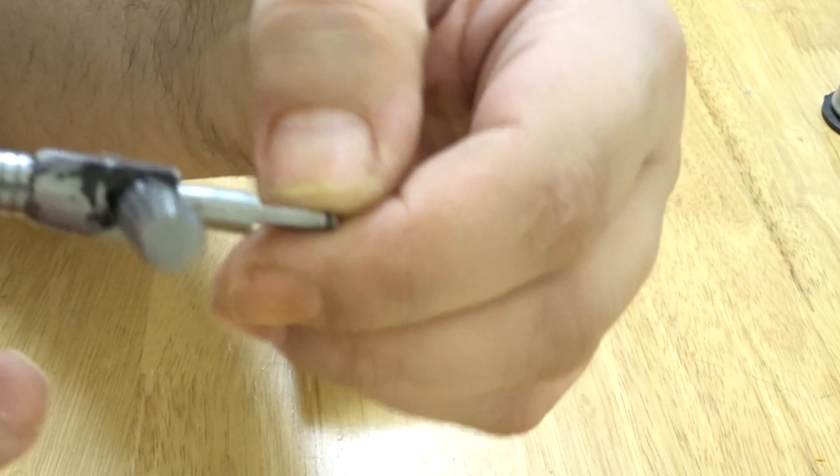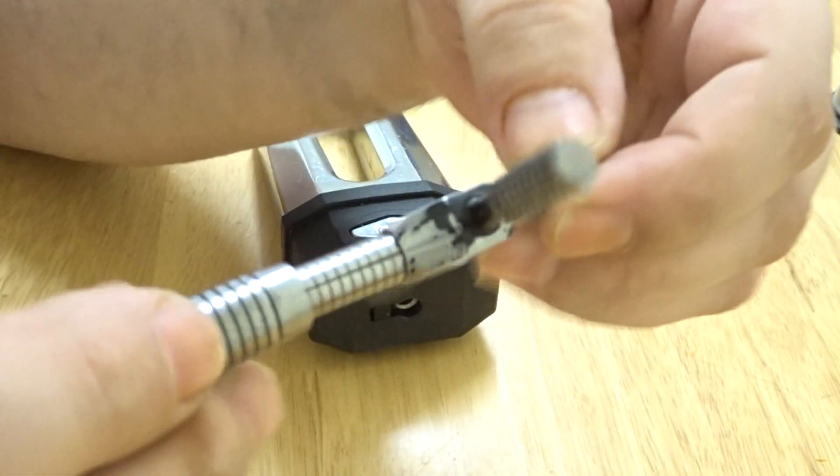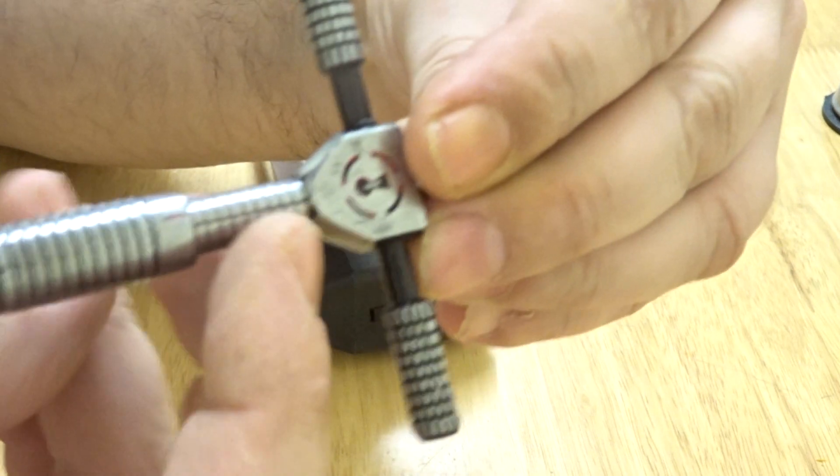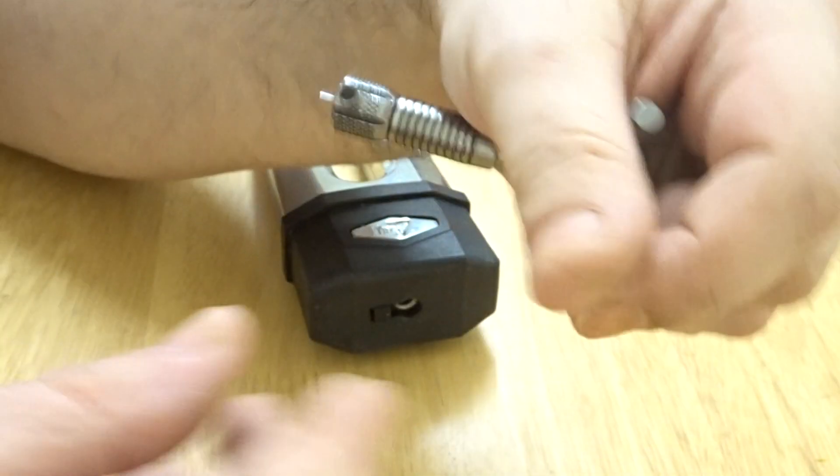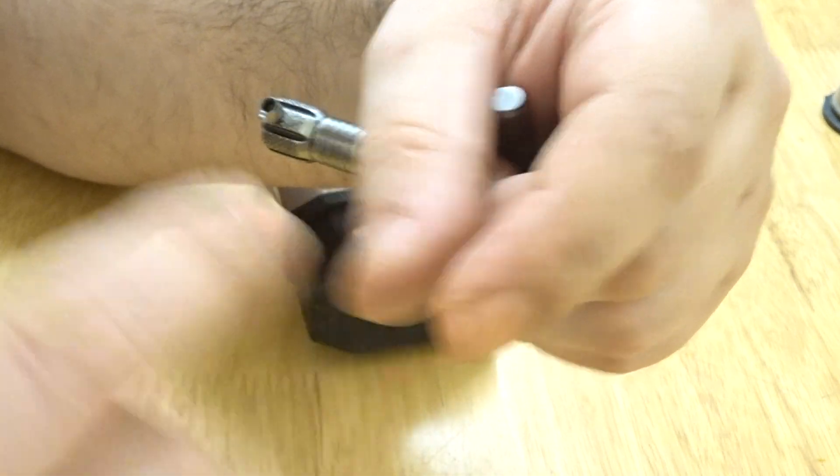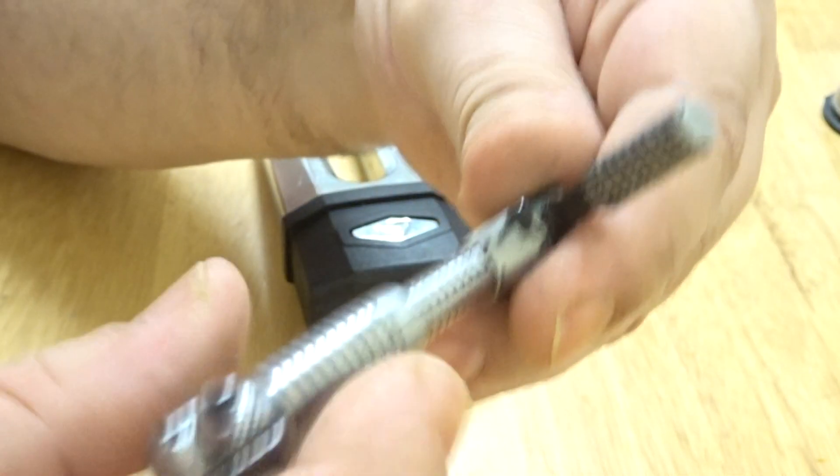So you've got to use a tension tool like that. And I've took all the black stuff off there because it was coming off. I just used a Dremel, and with the sanding discs, like a cutting disc, I used one of them and took it all off.